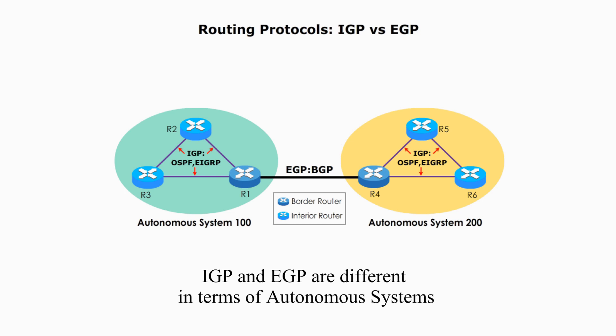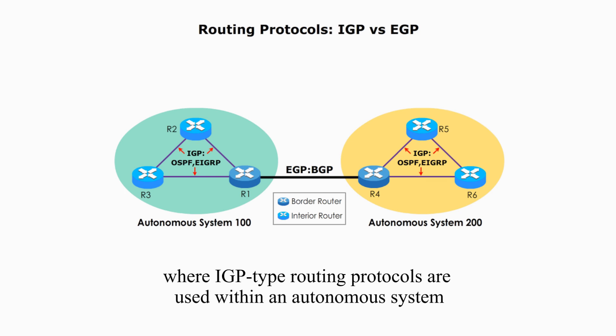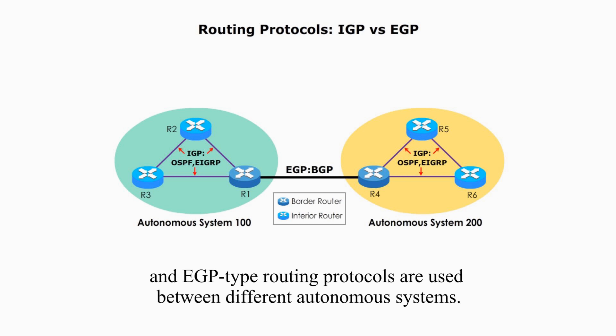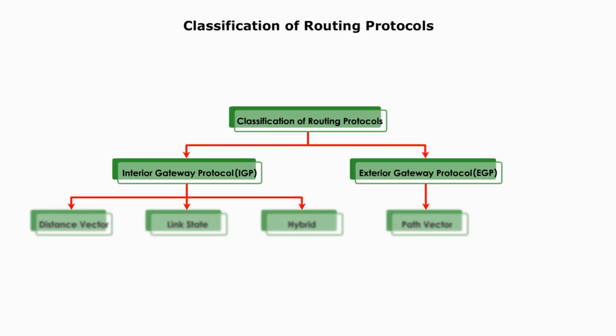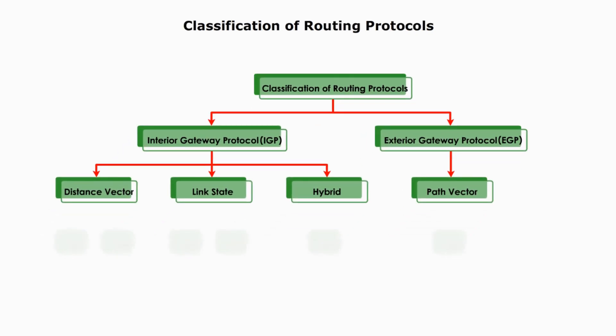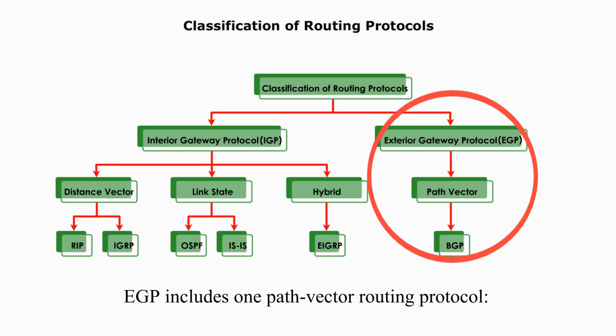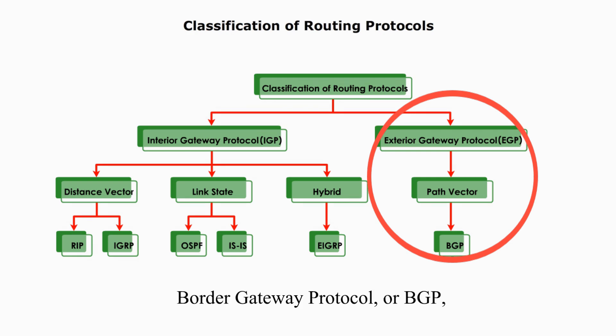IGP and EGP are different in terms of autonomous systems, where IGP routing protocols are used within an autonomous system, and EGP routing protocols are used between different autonomous systems. EGP includes one path vector routing protocol, Border Gateway Protocol, or BGP, used by AS border routers.